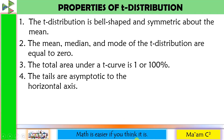Here are the properties of T-distribution. Number one, the T-distribution is bell-shaped and symmetric about the mean. Number two, the mean, median, and mode of the T-distribution are equal and equal to zero. Number three, the total area under a T-curve is 1 or 100%. Number four, the tails are asymptotic to the horizontal axis.